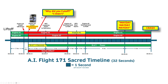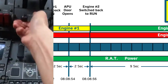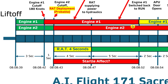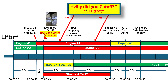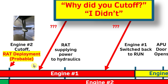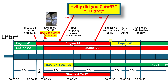At 08:08:52, they switch engine one back on. Many were asking why it took nine seconds to get around to switching engine one back on. There are two reasons: one is that this is where we think they had the conversation where one pilot says 'why did you cut off?' — that had to have happened after the engines were cut off and before the engine was switched back on. This conversation ate up a few seconds, plus the other pilot has to figure out what to do to switch it back on — about nine seconds total.